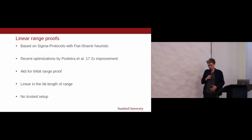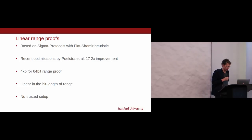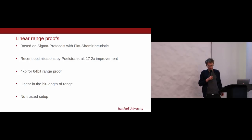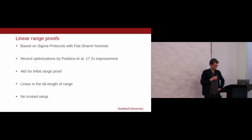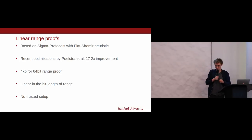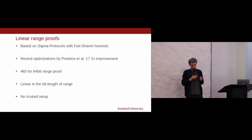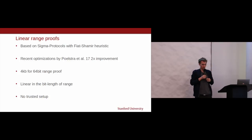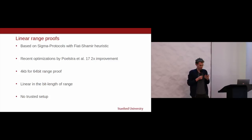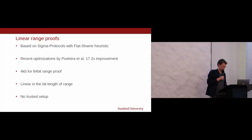The best previously known range proofs — used in confidential transactions in Monero and other private chains — were based on so-called Sigma protocols. With a lot of optimizations by Blockstream, this got down to 4 kilobytes for a 64-bit range proof. The problem is these proofs are linear in the number of bits: for a 52-bit range proof you need to send at least 52 commitments, and for two range proofs you need to send twice the data.